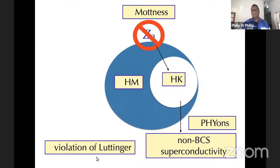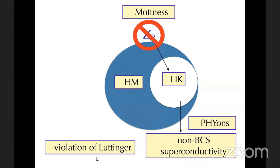To summarize: you can describe Mottness with the Hubbard model but you won't get very far. The HK model allows you to make precise statements. Both HK and the relevant part of the Hubbard model break the Z2 symmetry. We find pion excitations, non-BCS superconductivity, and a violation of Luttinger's theorem in general.